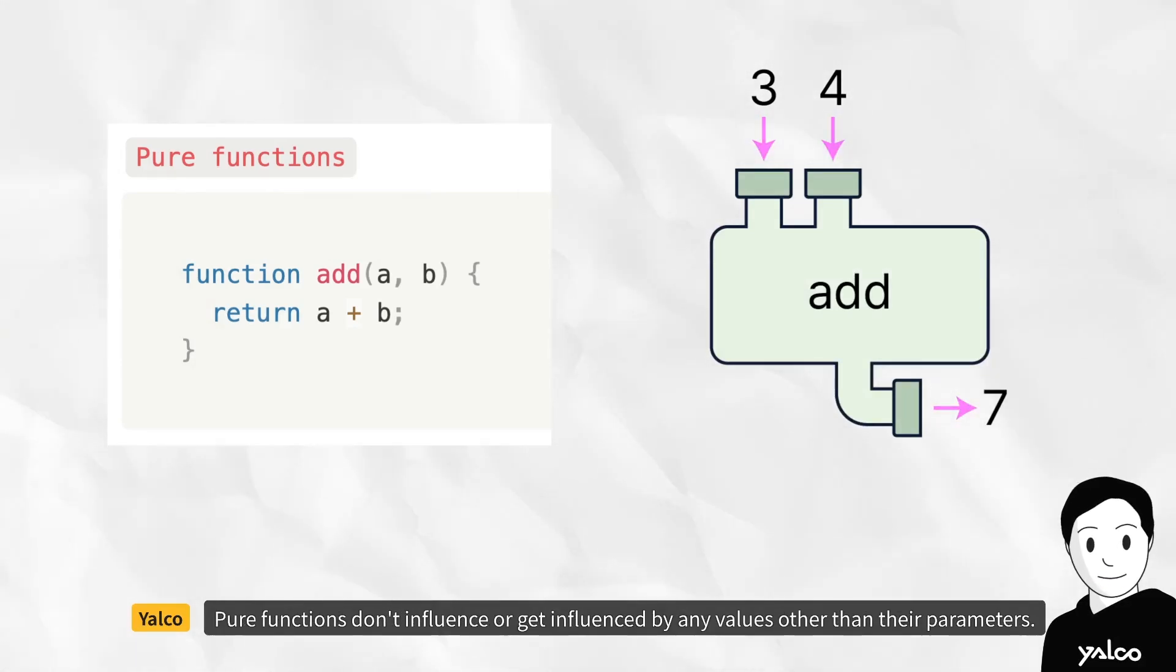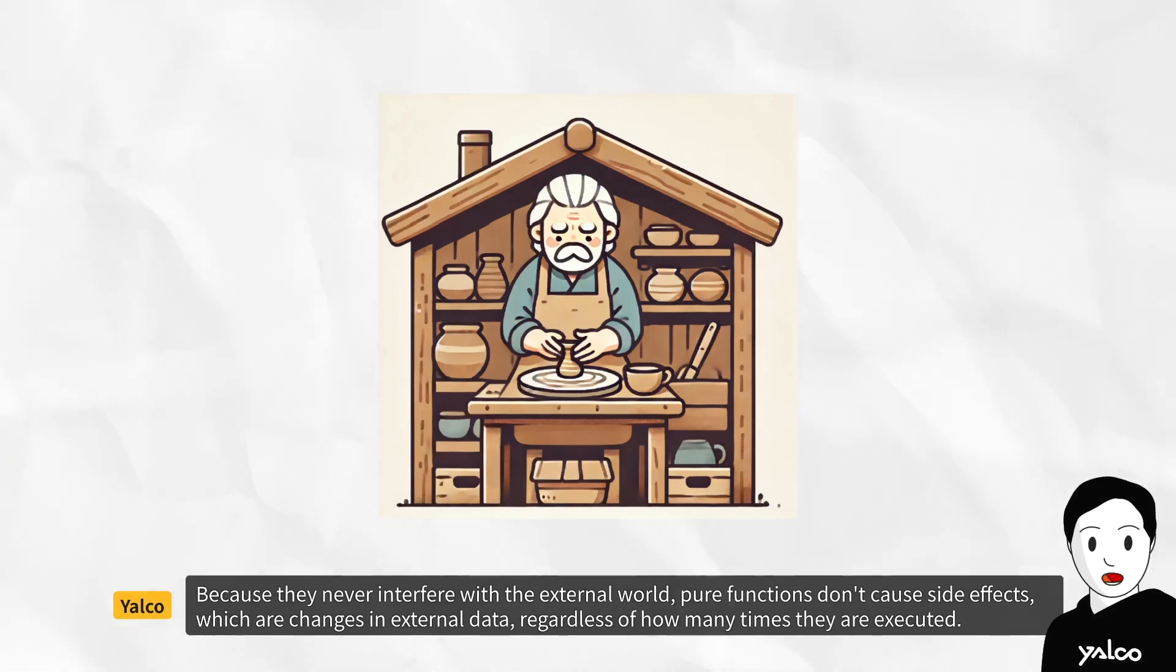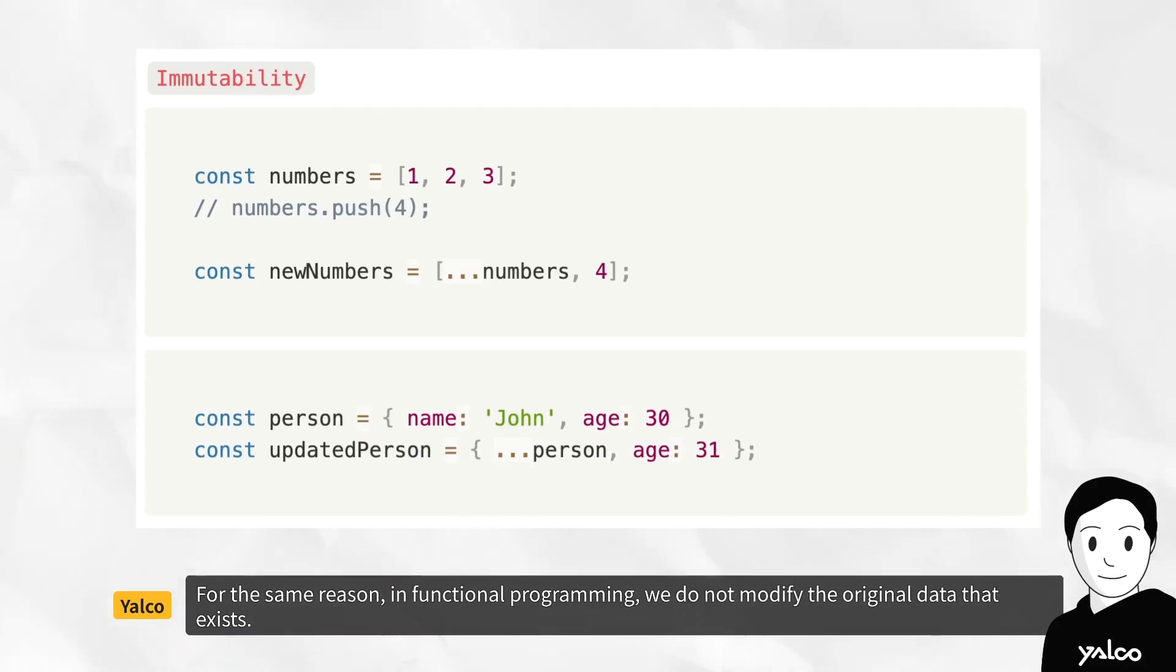Pure functions don't influence or get influenced by any values other than their parameters. They are very much like craftsmen making the same pottery every time with the given materials, without caring about the world outside. Because they never interfere with the external world, pure functions don't cause side effects, which are changes in external data, regardless of how many times they are executed.